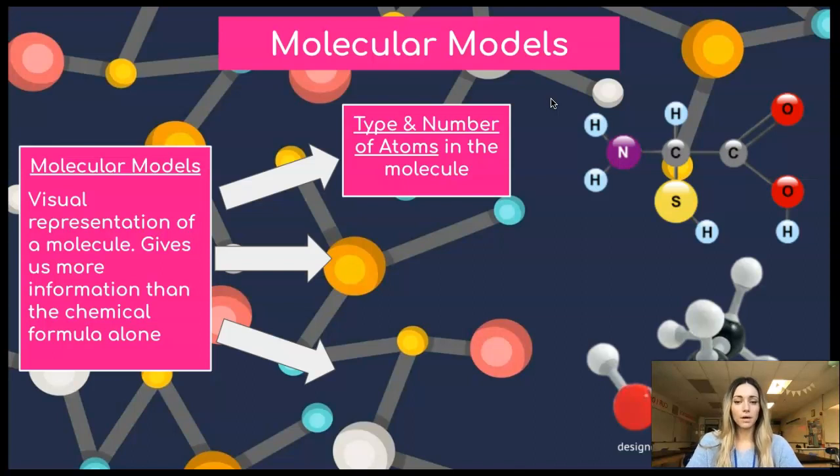First, when looking at a molecular model, I can easily and quickly identify the type and number of atoms that are present in the molecule. If you look over here at this example, I can see that I could quickly look at this model and determine what types of atoms are there and how many of each there are.